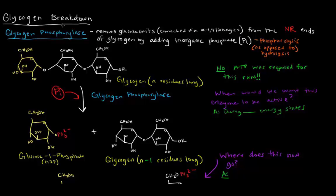In this video, I want to talk about glycogen breakdown. The enzyme involved in glycogen breakdown is glycogen phosphorylase, which we would expect to attach a phosphate, because it's a phosphorylase, to glycogen.